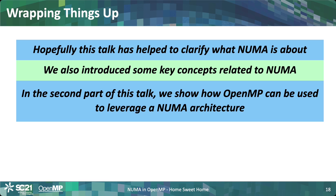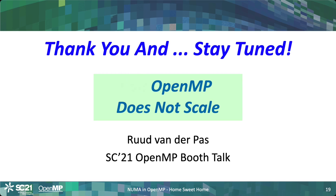Remember, the strength of the NUMA architecture is scalability — you have a lot of bandwidth, and if you can exploit that you can get very good performance. You also have additional cache space scattered over the system, and if you can take advantage of that you can get really good performance out of a NUMA architecture. And in case somebody tells you OpenMP does not scale, just correct them and say: badly tuned OpenMP does not scale.